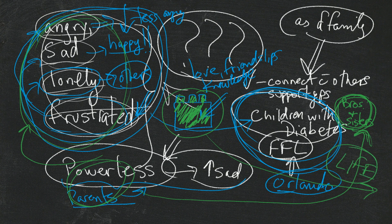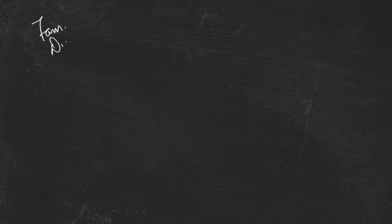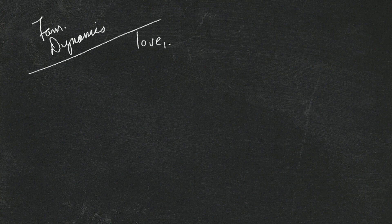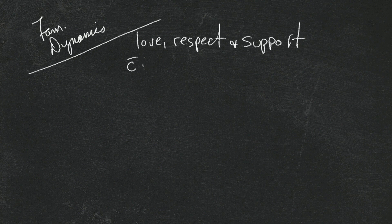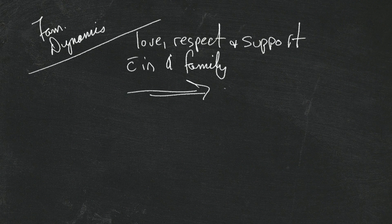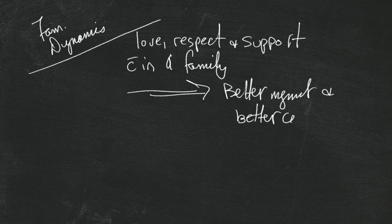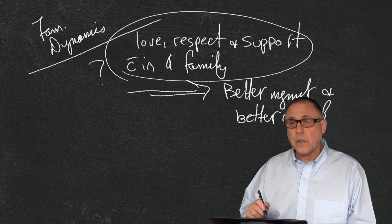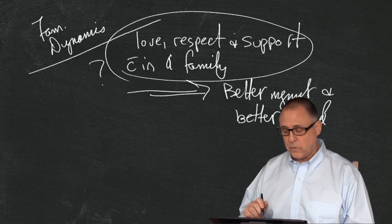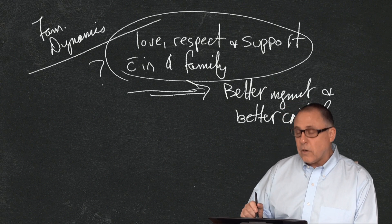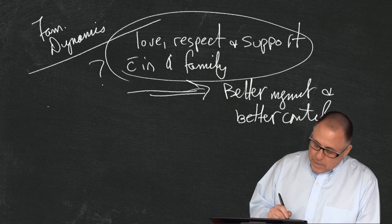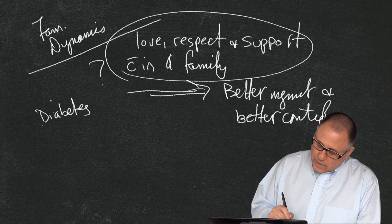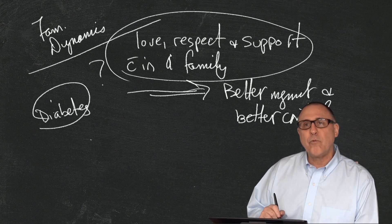A little bit more about family dynamics — it's really important to spend some time thinking about that and openly talking about it. What they have found is that love, respect, and support within a family equals better management and better control. If you're feeling loved, respected, and supported in doing what you need to do, it's easier to do it. And diabetes is the kind of disease that if you don't have your act together as a family, it can really make things difficult.